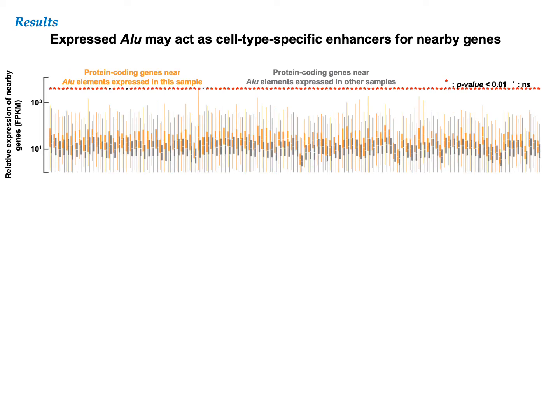For many biosamples, we had both RNA-seq and RAMPAGE data, so we performed this analysis in each sample and ended up with a whole lot of box plots, one for each biosample. These results consistently showed that the genes near expressed Alu elements were expressed at significantly higher levels than the genes near unexpressed Alu elements.